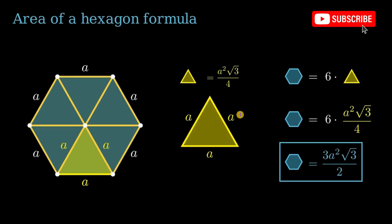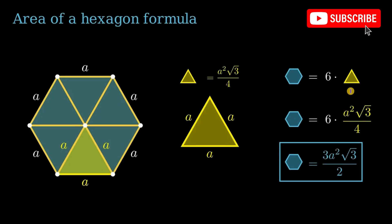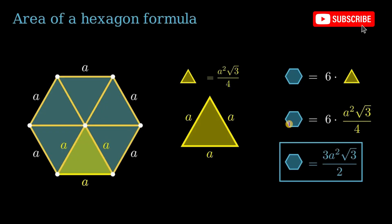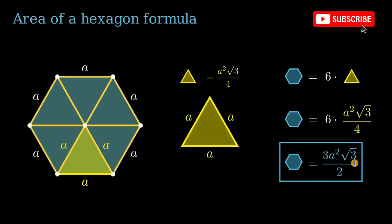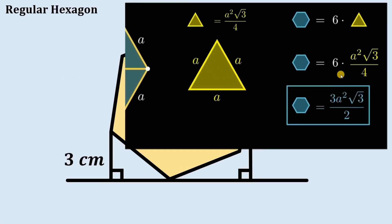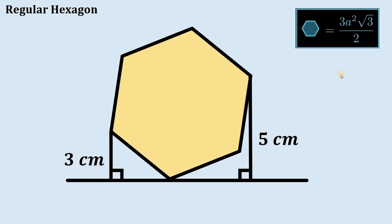Since this hexagon consists of six equilateral triangles, the area of the hexagon equals six times the area of one equilateral triangle. This means the area of the regular hexagon equals 6 times a² times square root of 3 over 4, which simplifies to 3a² times square root of 3 all over 2. This is what we need to answer this question.